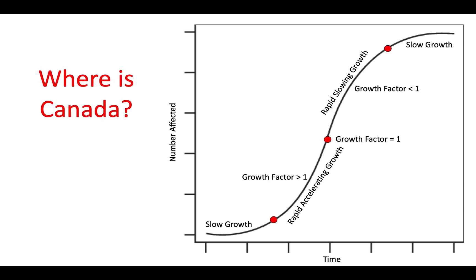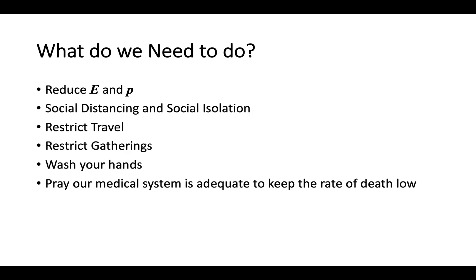Where is Canada right now on this curve? We're right here — we're just starting to rapidly accelerate our growth. So what do we need to do? We need to reduce exposures and the probability someone will get the virus if they are exposed. We need to socially distance and socially isolate, restrict travel, restrict gatherings, wash our hands, and we need to pray our medical system is adequate to keep the rate of death low.